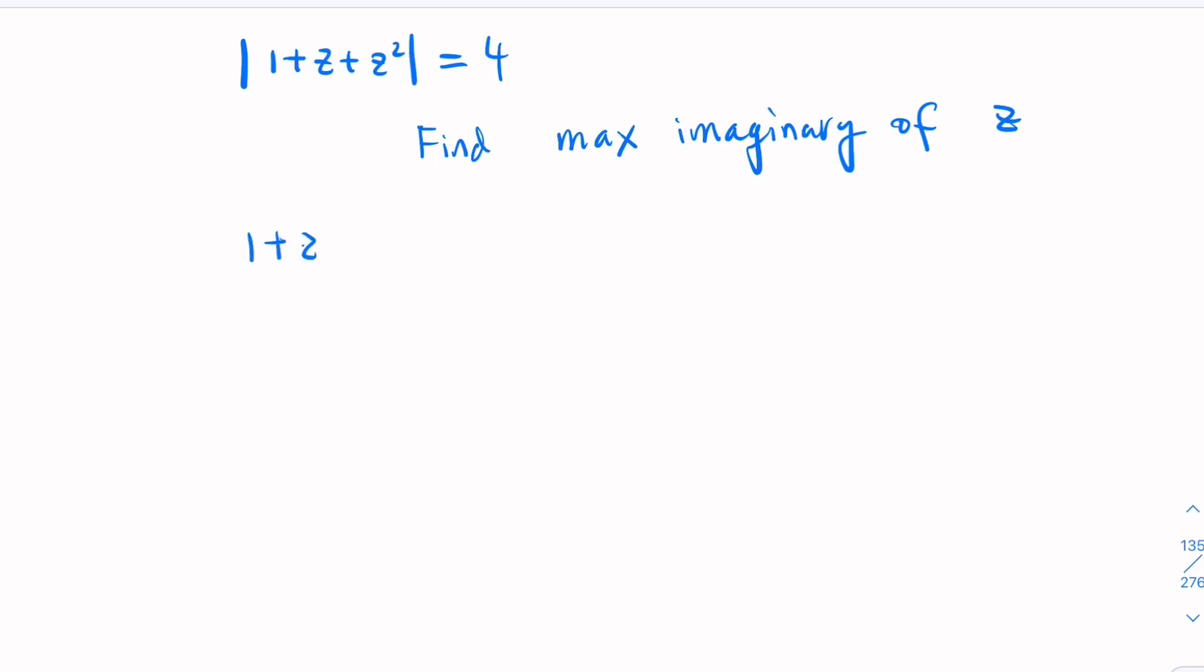What you want to do here is rewrite this 1 plus z plus z squared. Let's complete the square: that's z plus 1 half squared. This is 1, this is 1, this is 1 quarter, so you need to add 3 over 4. We're given that z plus 1 half squared plus 3 quarter, the modulus equal to 4.